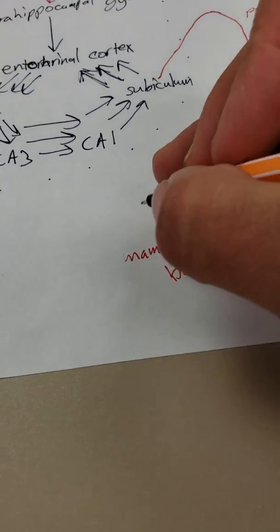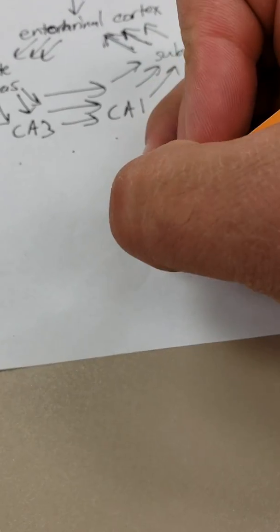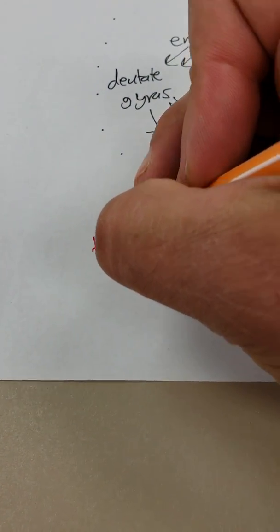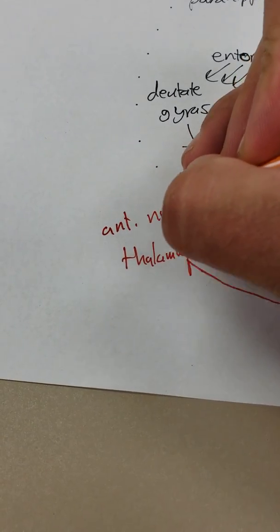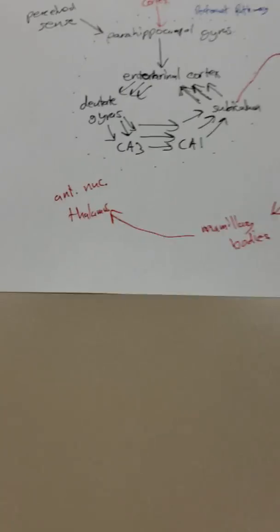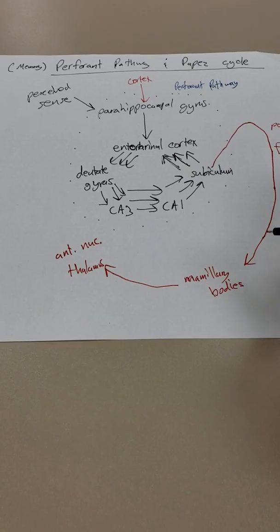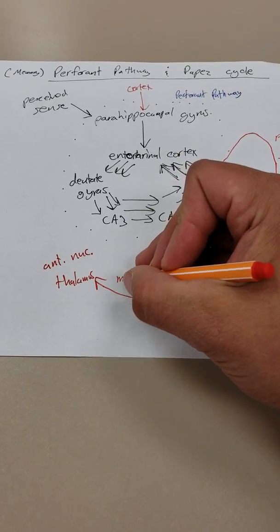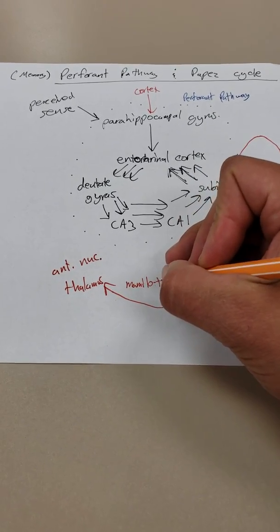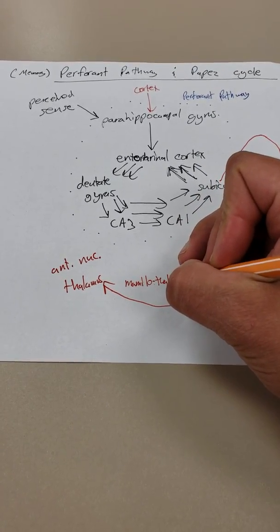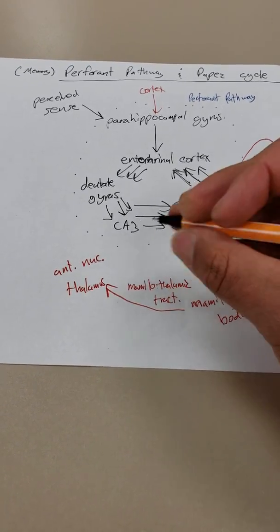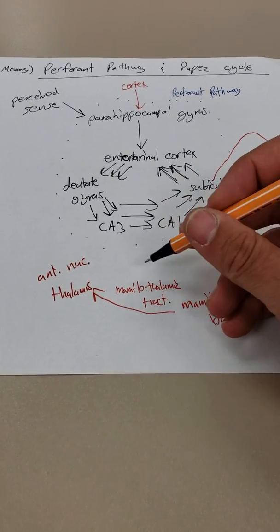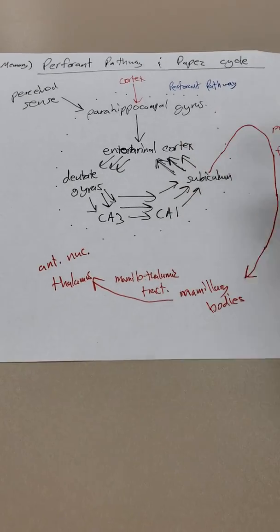The mammillary bodies then do some crosstalk and some integration of memory, but will afterwards send projection fibers to the thalamus. Specifically, to the anterior nucleus of the thalamus. You need to start knowing your nuclei of the thalami, and the anterior nucleus is involved in this. These projections are called mammillothalamic tract. This is actually a white matter tract that sometimes is seen grossly in the middle of your thalamus.